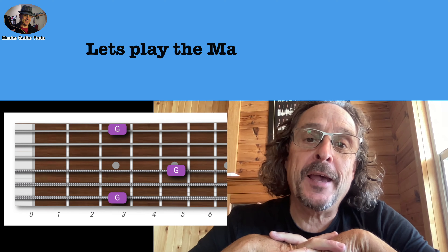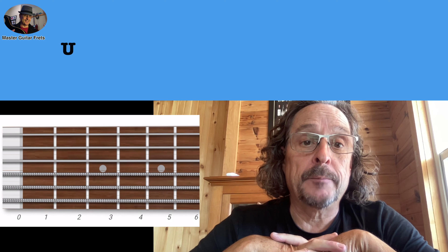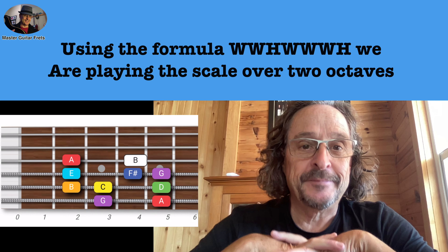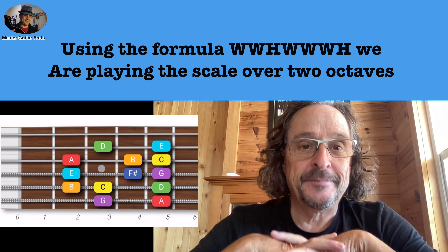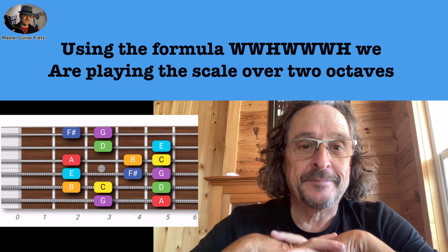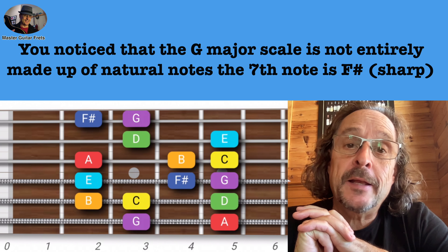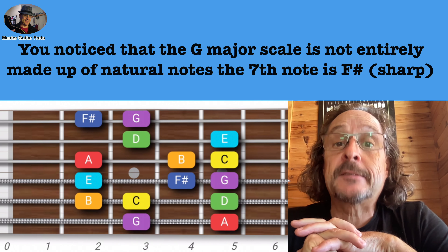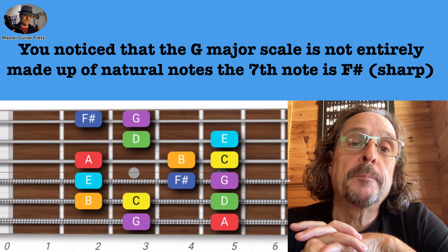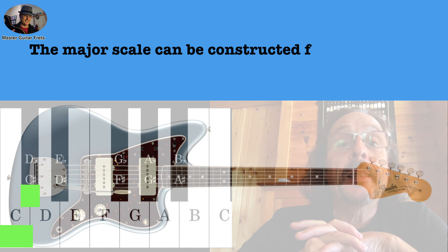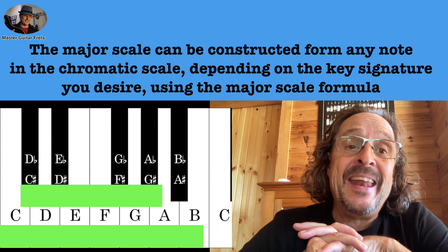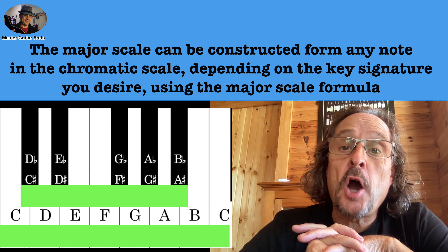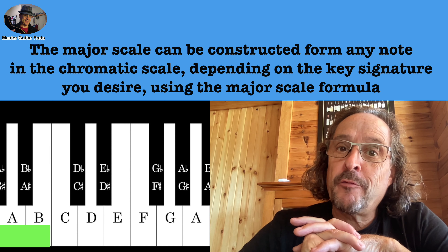Let's play the major scale on G to make it a G major scale. We are playing the scale over two octaves. You'll notice that the G major scale is not entirely made up of natural notes — the seventh note is an F sharp. The major scale can be constructed from any note in the chromatic scale, depending on the key signature. If you start it from A to A, then you play the A major scale.